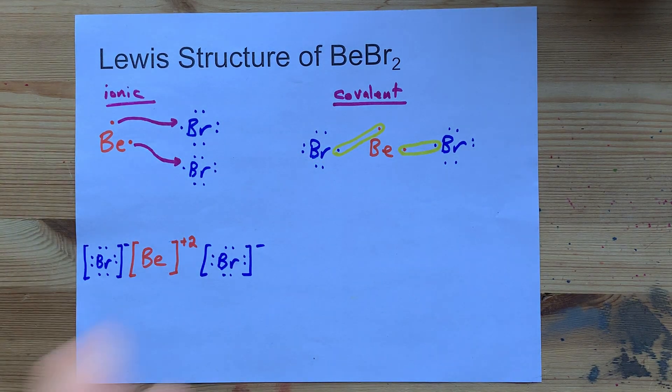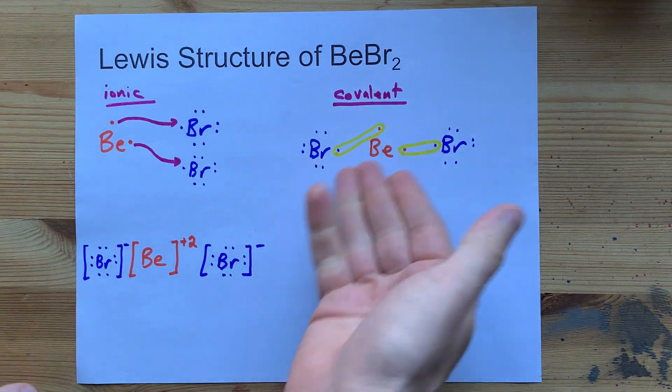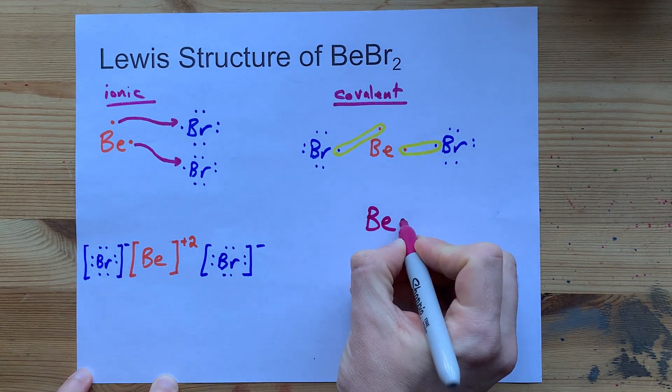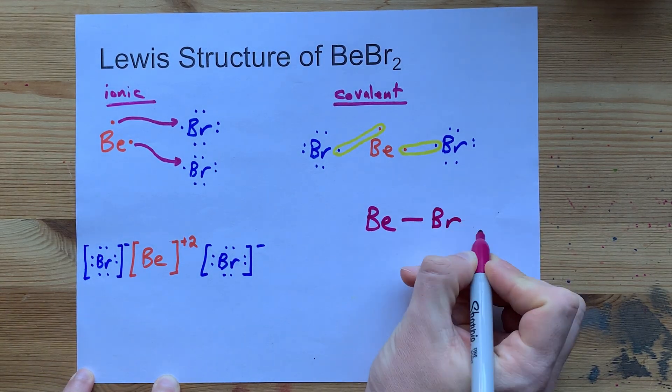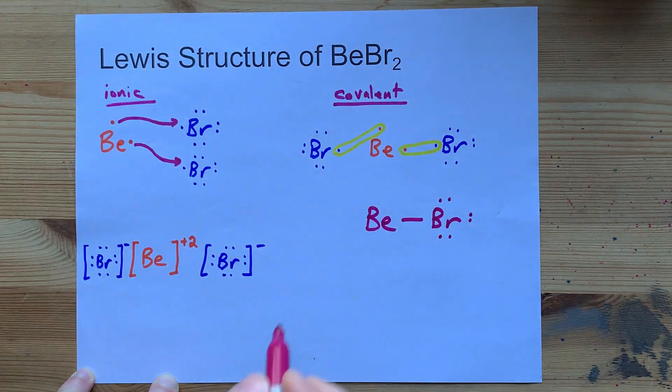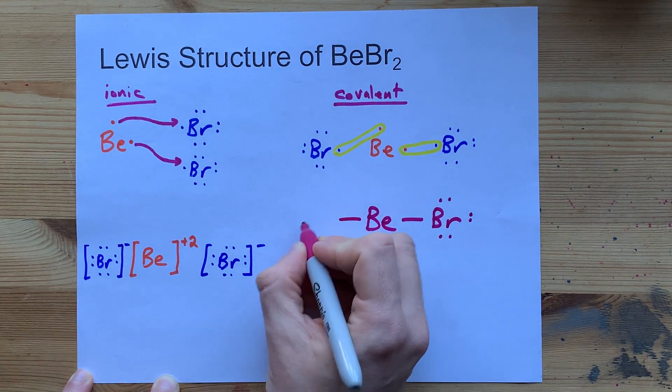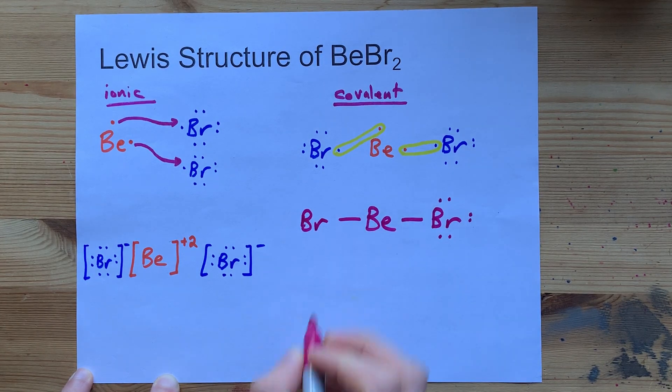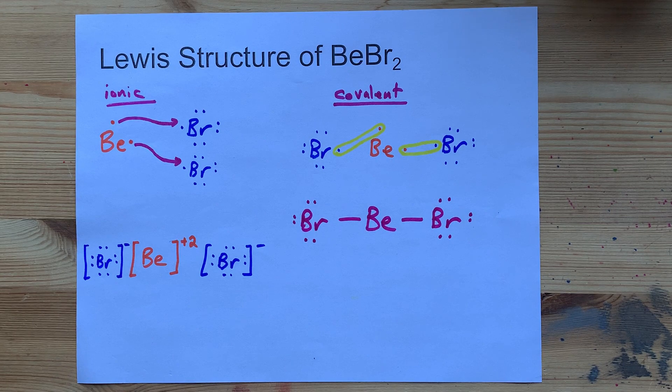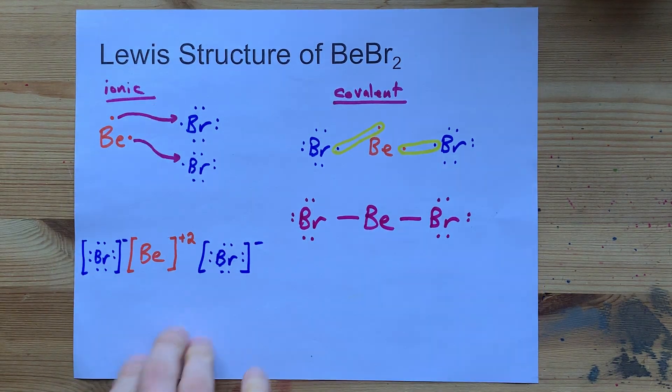And so, thusly, the Lewis structure, if you're going to draw this in a covalent way, is to have your beryllium covalently bonded to a bromine. That bromine had three lone pairs that weren't involved in the bonding. And beryllium covalently bonded to the other bromine, which also has three lone pairs of electrons. This is the ionic Lewis structure. This is the covalent Lewis structure.